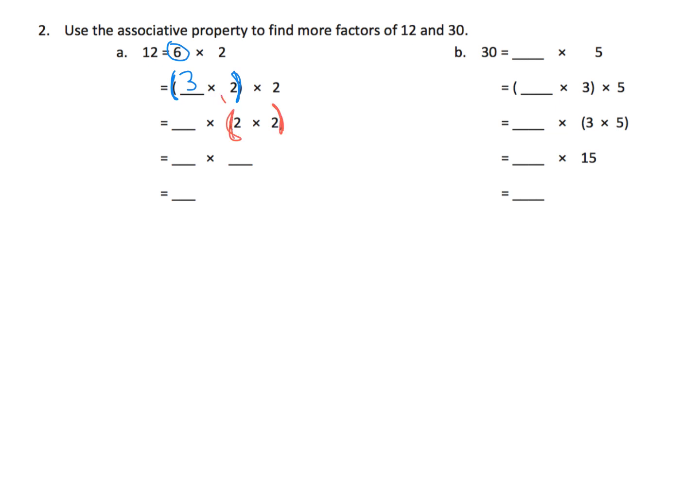And now we can use the associative property to change how they're grouped. So now we're not changing the order of the numbers. We're just changing how they're grouped. So now you have 3 times, and then 2 times 2, which means you have 3 times 4.